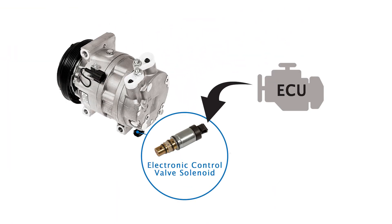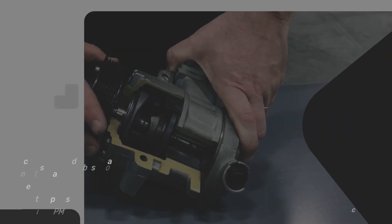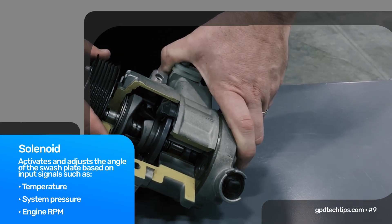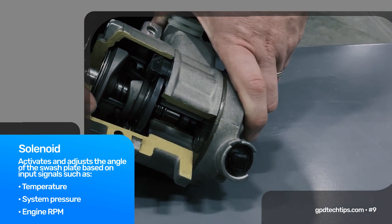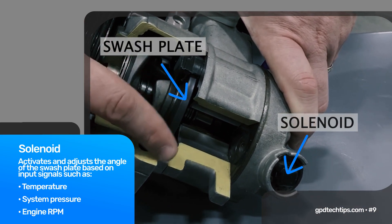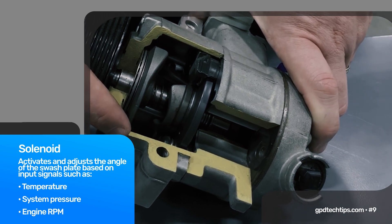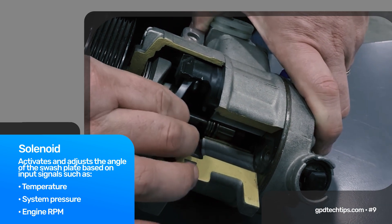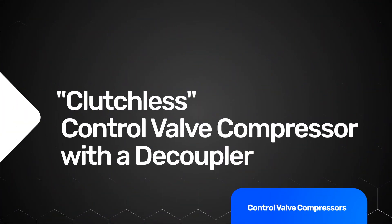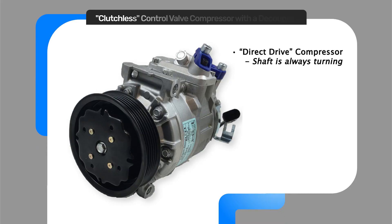For simplicity, we will refer to this component as simply the solenoid. The solenoid is an electrical component that operates on a pulse width modulated signal. It activates the internal swash plate and changes the angle of the swash plate as dictated by the ECU.